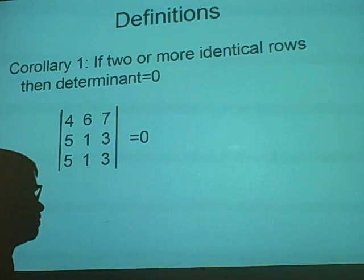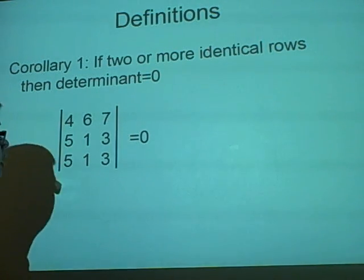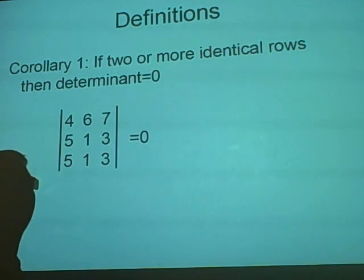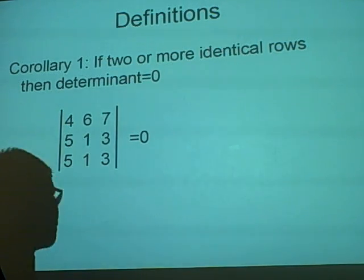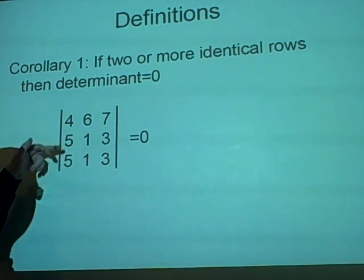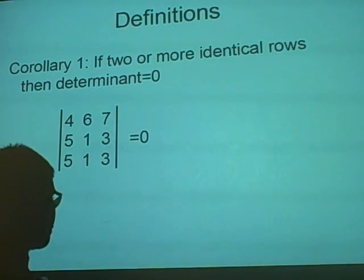I'm not sure what that means, but I think it's another word for theorem. If you have two or more identical rows, then the determinant is zero. So here we have two rows—they're both 5 1 3—so the determinant is zero.